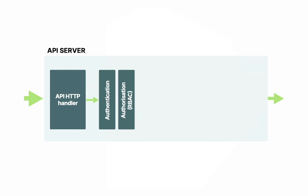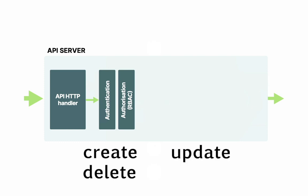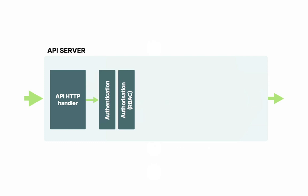Authorization checks whether you as a user can create, delete, update, or list the given resource within the cluster. This is where role-based access control rules are evaluated. If you as a user are not authenticated or do not have the correct roles assigned, your request will be rejected here.